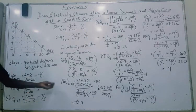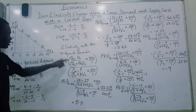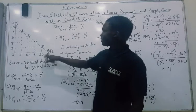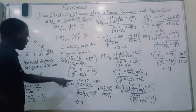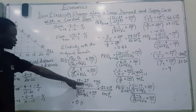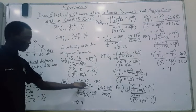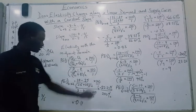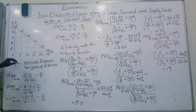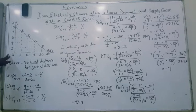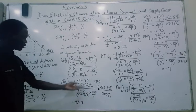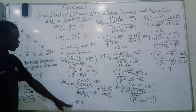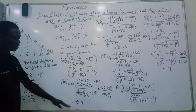We need to calculate the price elasticity of demand from price 0 to price 2. The quantity at price 0 is 25, and the quantity at price 2 is 20. So the new quantity is 20 minus the old quantity 25, divided by 25 plus 20 over 2, times 100 over 1. That gives us minus 22.22%. The new price is 2 minus 0, divided by 2 plus 0 over 2, times 100 over 1, giving us 200%. Dividing, we get minus 0.11.